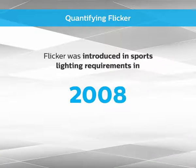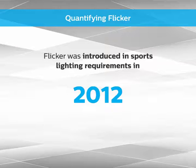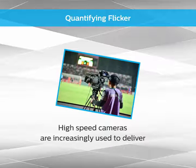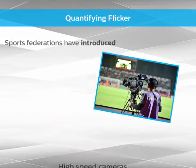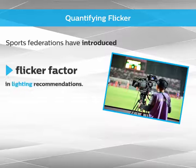Even though the phenomenon has been known for years, flicker was only introduced in sports lighting requirements in 2012. Since then, because high-speed cameras are increasingly used to deliver the best possible angle on the action, sports federations have started to introduce a flicker factor in their lighting recommendations.